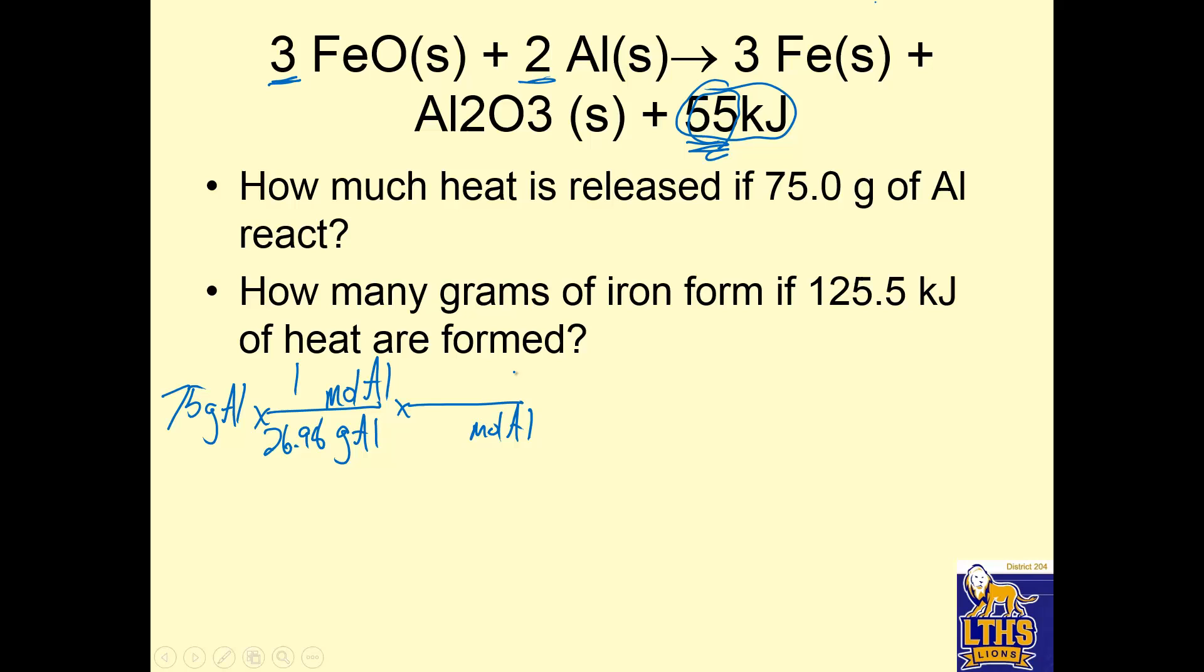Now when I have moles of aluminum, I can now convert that directly into heat. Now normally we say moles over moles, but we can convert moles into heat, because 2 moles of aluminum equals 55 kilojoules. And that's it. I'm all done. So 75 divided by 26.98 times 55 divided by 2 is 76.44 kilojoules of heat.